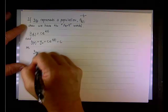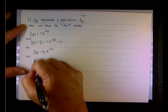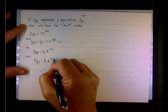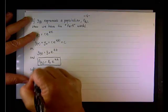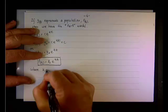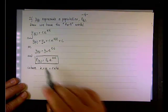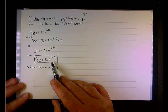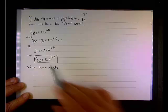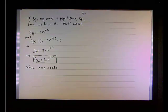So y of t equals y sub zero e to the kt and if we use p of t, then we have p of t equals p sub zero e to the power of kt, which is the PERT model for population, where k equals r equals the rate. And you learned that in prior courses, but remember the definition of e that I gave you yesterday, and it works well with the compounding interest if you replace e with the limit definition. I want to give you a quick example to wrap this up.